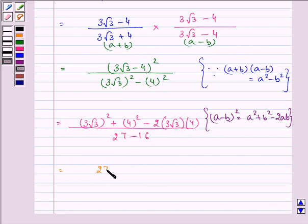Now we have 27 plus 16 minus, on simplifying we have 2 multiplied by 3 gives us 6, 6 multiplied by 4 gives us 24, and we have root 3 along with it upon 27 minus 16 gives us 11.